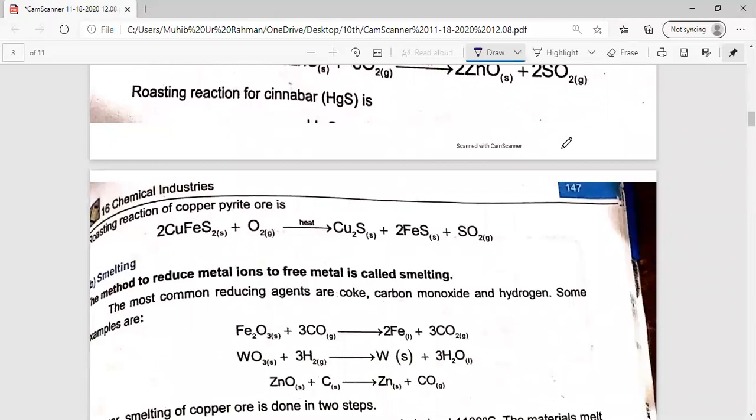Similarly, copper pyrite, when we heat it at melting point, then iron sulfide plus sulfur dioxide can be converted.